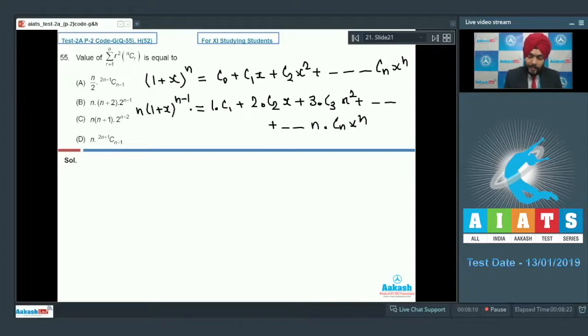In order to get the series sigma r squared into nCr, I will have to multiply this particular equation with x. So n x into 1 plus x raised to power n minus 1 equals C1 x plus 2 C2 x square plus 3 C3 x cube up to n Cn x power n.